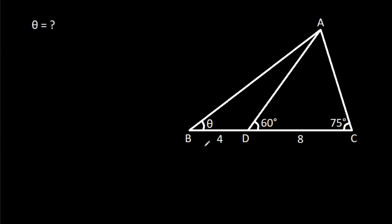In this video, we have been given that BD is 4, CD is 8, angle ACD is 75 degrees, angle ADC is 60 degrees, and angle ABD is theta. We have to find theta.